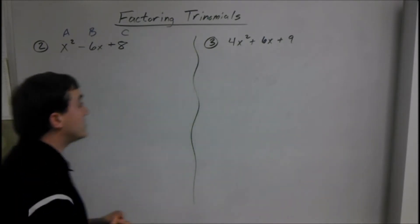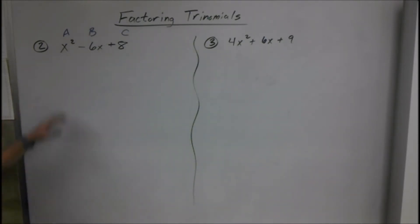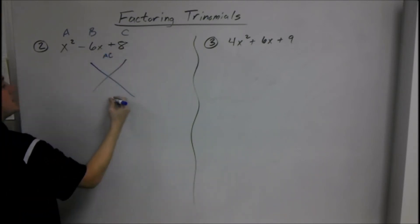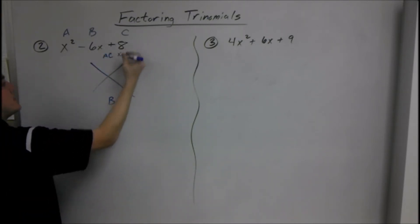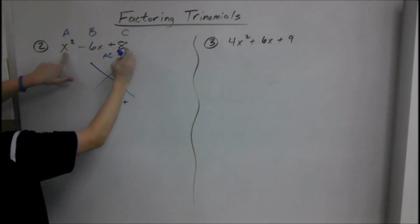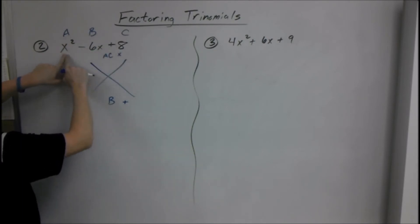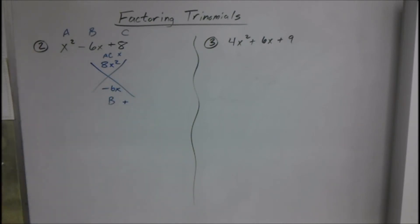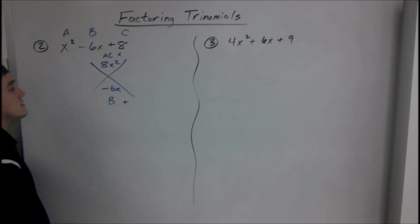Our next example. Still using the AC method. We need to set up our X. A times C in the top, B goes in the bottom. A times C is X squared times 8, so 8X squared, that add up to negative 6X. What two things multiplied equal 8 that add up to negative 6?